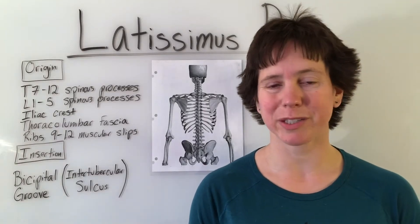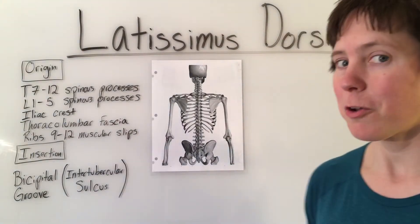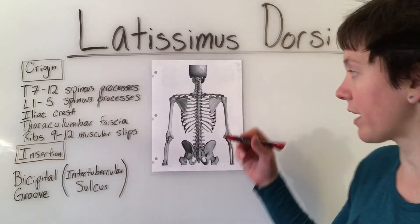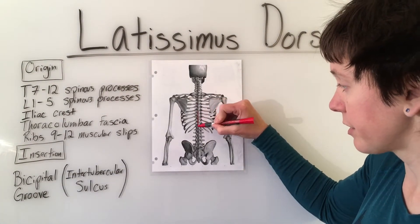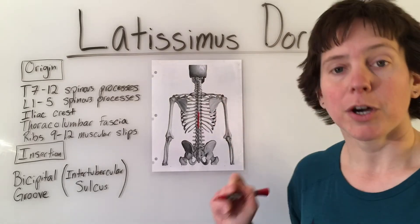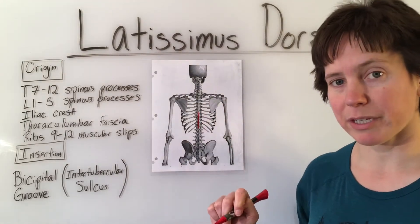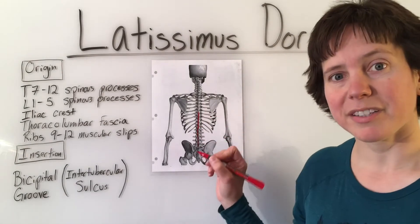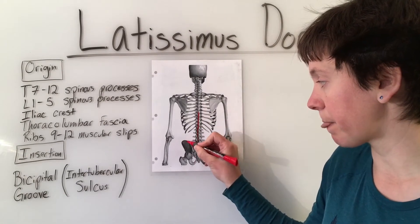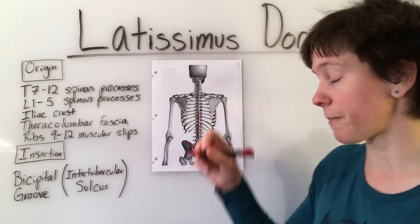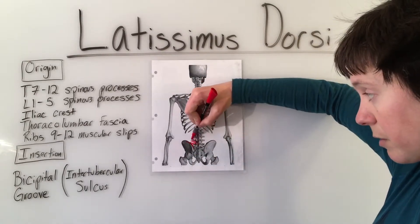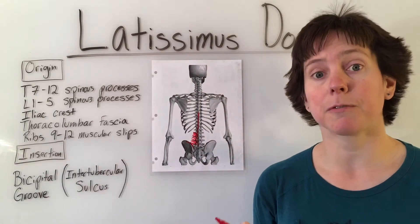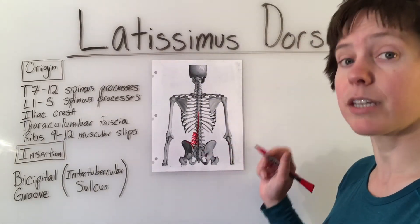The latissimus dorsi originates on a number of areas. First, it originates on T7 through T12 — the lower half of the thoracic spinous processes — all of the lumbar spinous processes L1 through 5, the iliac crest posterior lip, the thoracolumbar fascia, and the muscular slips of ribs 9 through 12.